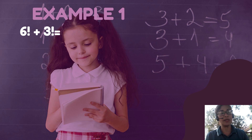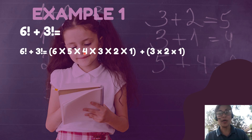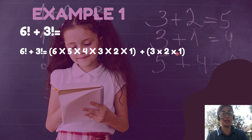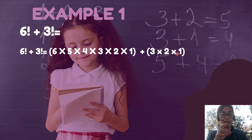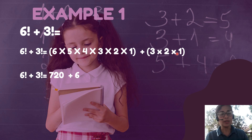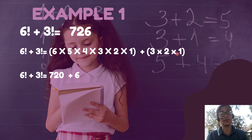Example number 1: we have 6 factorial plus 3 factorial. So 6 factorial is 6 times 5 times 4 times 3 times 2 times 1, added to 3 factorial, which is 3 times 2 times 1. You can solve this in your calculator. So 6 factorial is 720, and 3 factorial has a value of 6, so 720 plus 6 will be equal to 726.